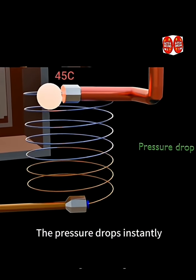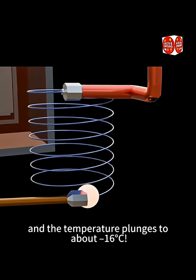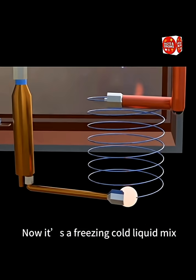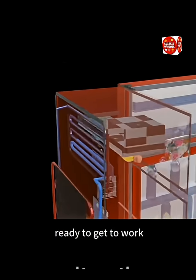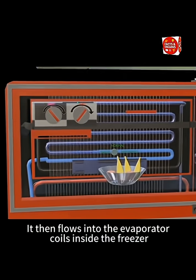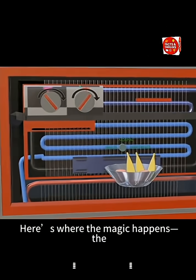The temperature plunges to about minus 16 degrees Celsius. Now it's a freezing cold liquid mix, ready to get to work. It then flows into the evaporator coils inside the freezer. Here's where the magic happens.